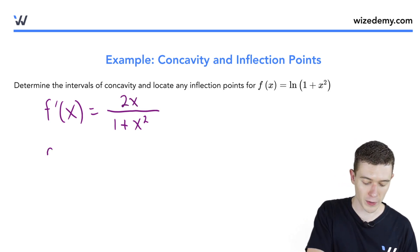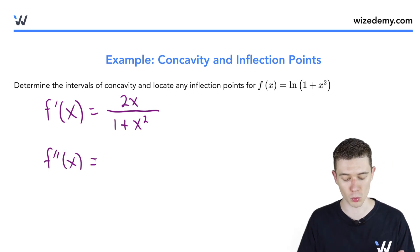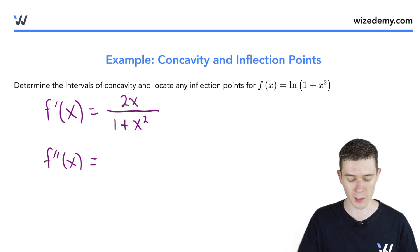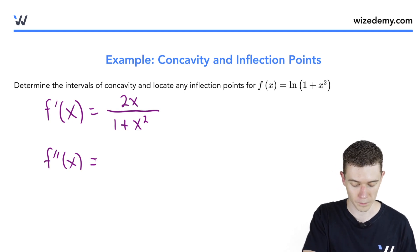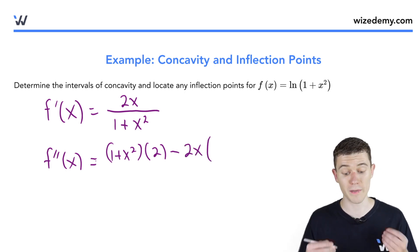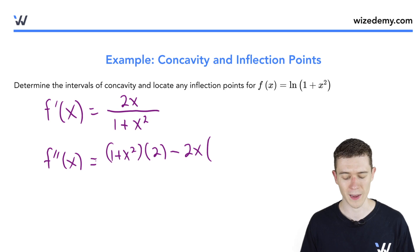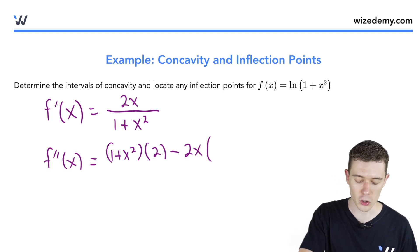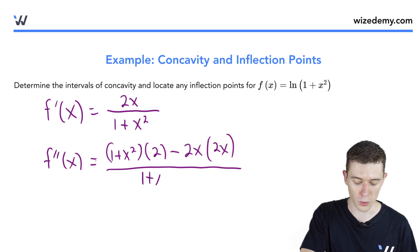So let's take the derivative of the first derivative — f double prime. Here we'll use the quotient rule: low d high minus high d low over low squared. So it's the denominator, times the derivative of 2x which is 2, minus the numerator times the derivative of the denominator — the derivative of 1 is 0, and the derivative of x squared is 2x — all over low squared. We square the entire denominator.